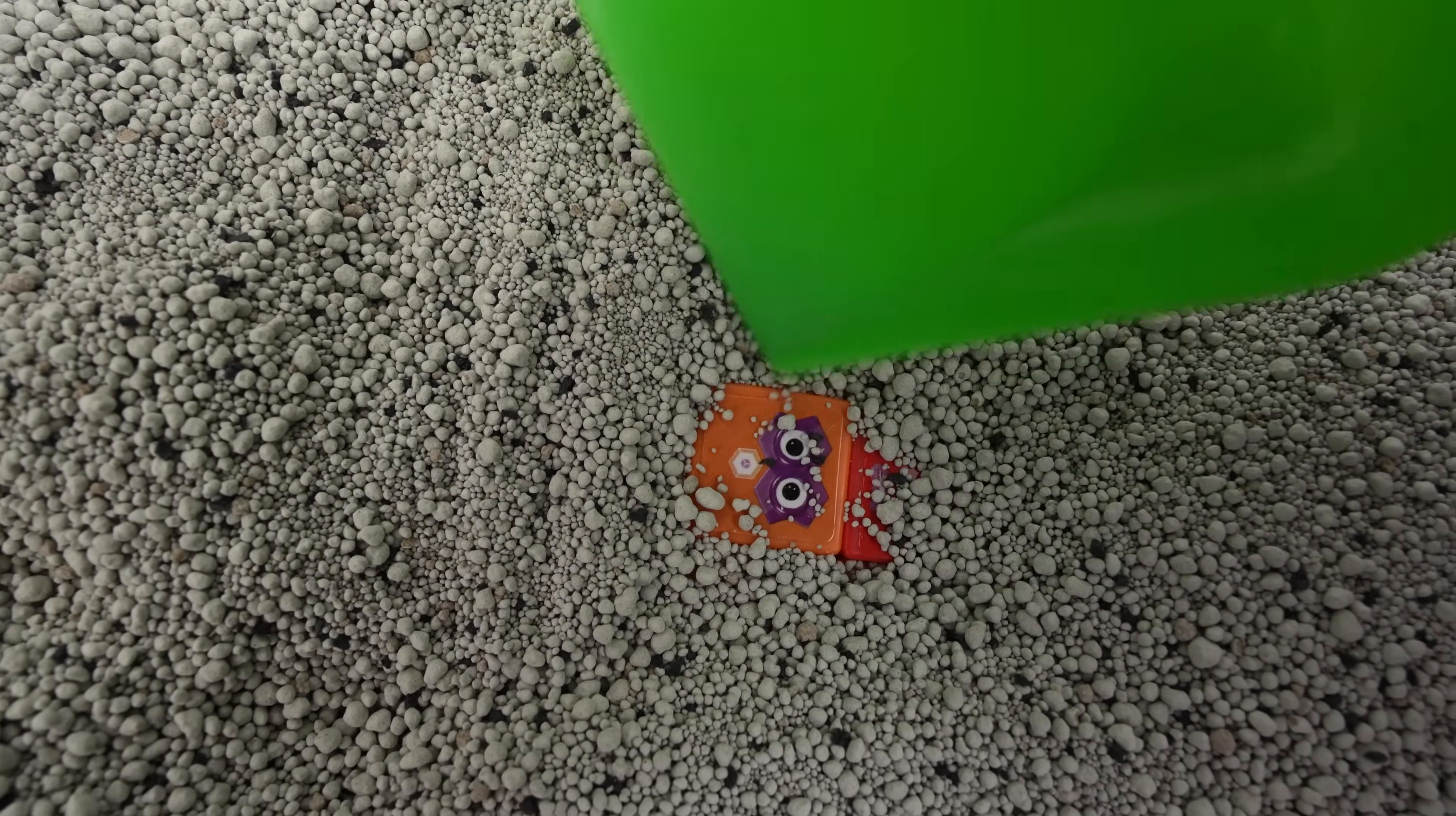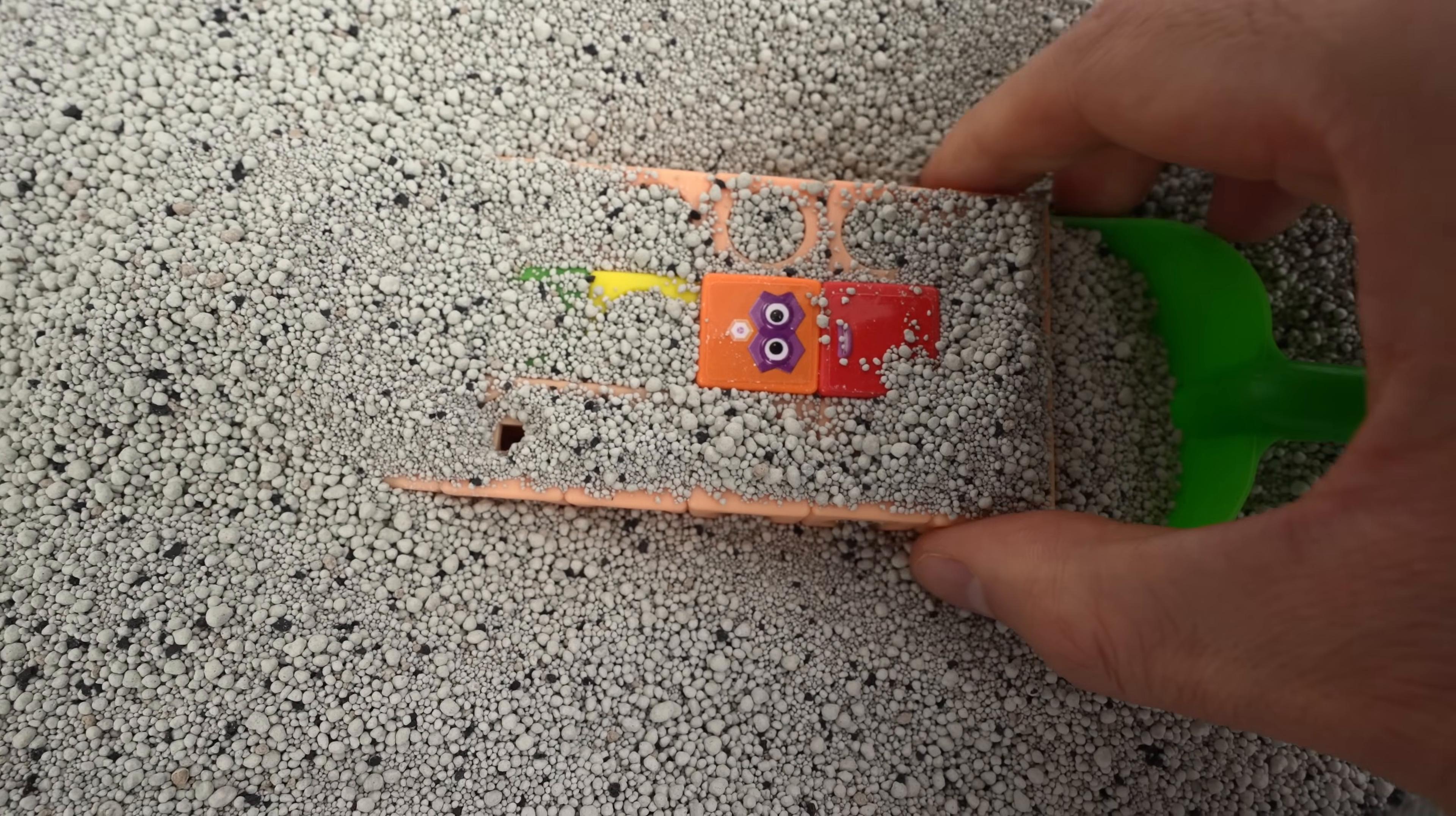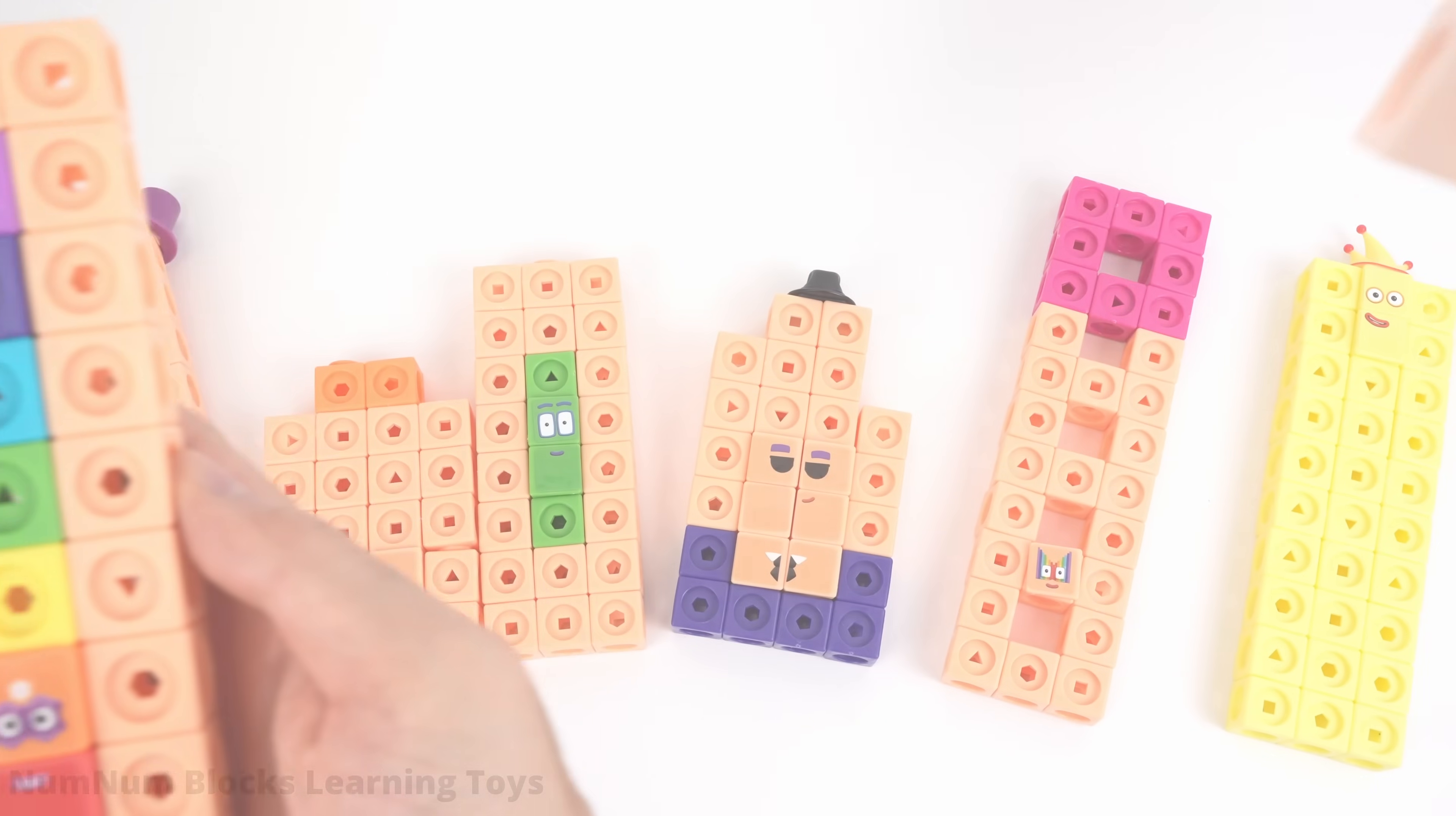Hmm, nothing here. Oh look, I see a pair of eyes. And I see a mouth. Do you know this number block? This number block has many colors. Let's see who it is. It's 27. Seven colors of the rainbow surrounded by 20 peach blocks. I'm 27.